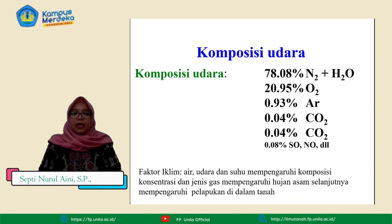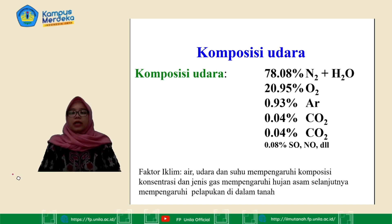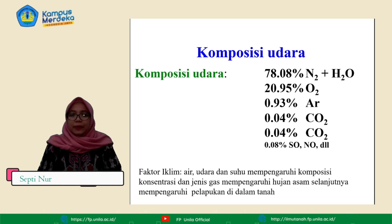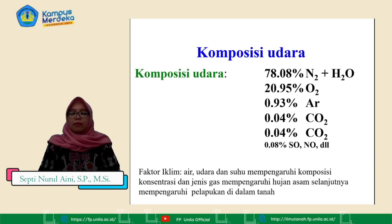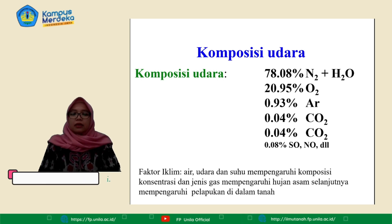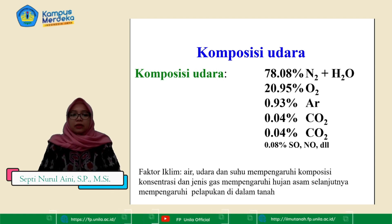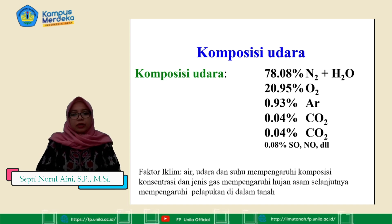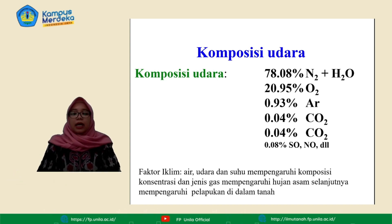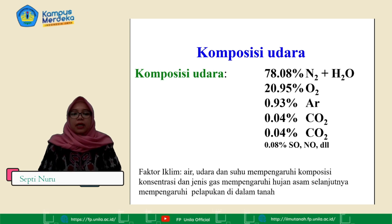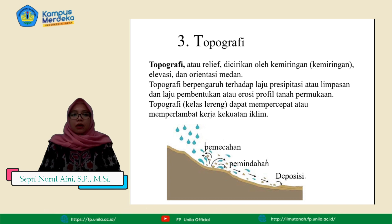Komposisi udara ini terdiri dari 78,08% N₂ dan H₂O, 20,90% O₂, 0,93% Ar, 0,04% CO₂, dan 0,08% SO, kemudian NO, dan lain-lain. Faktor iklim seperti air, udara, dan suhu akan mempengaruhi komposisi konsentrasi dan jenis gas yang akan mempengaruhi hujan asam, selanjutnya akan mempengaruhi pelapukan di dalam tanah.